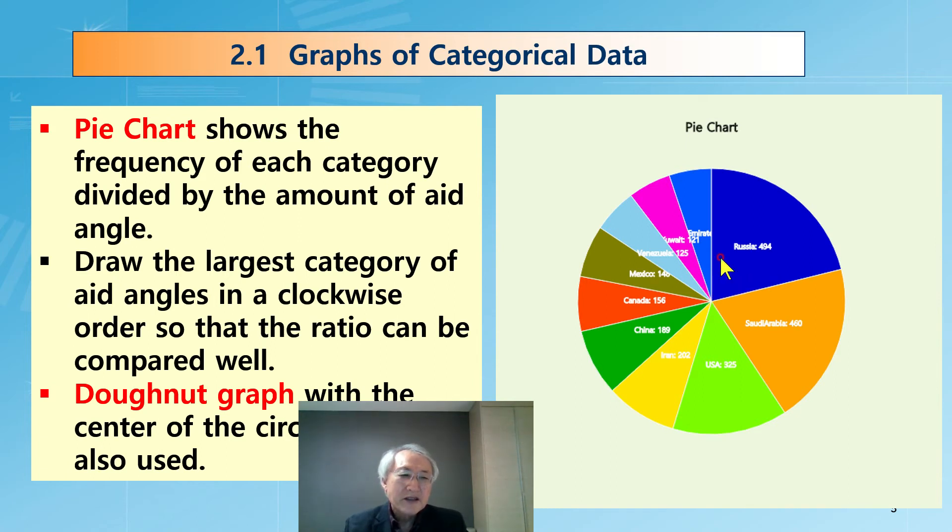There are several variations. Maybe they automatically plot the largest frequency at the top. This is 12 noon. It's counterclockwise. They draw sometimes in this manner. But it depends on some software. Some software starts from 3 o'clock. In case of E-STAT, this is the example of E-STAT. It starts from noon and draws some pieces one by one, by decreasing order.